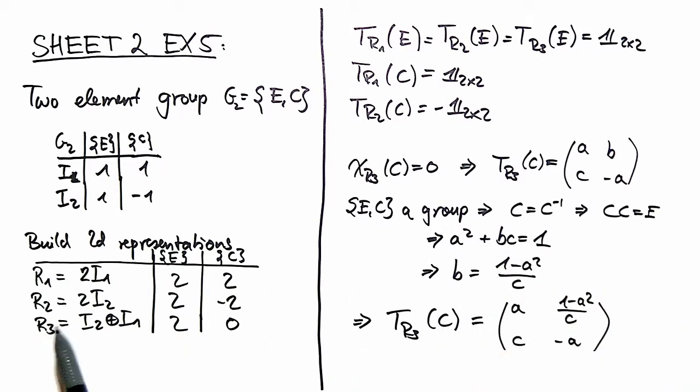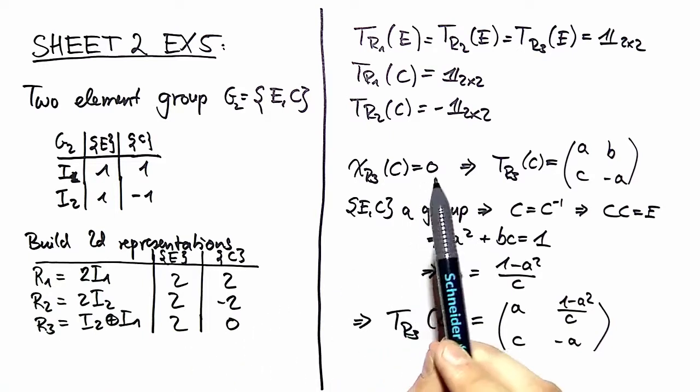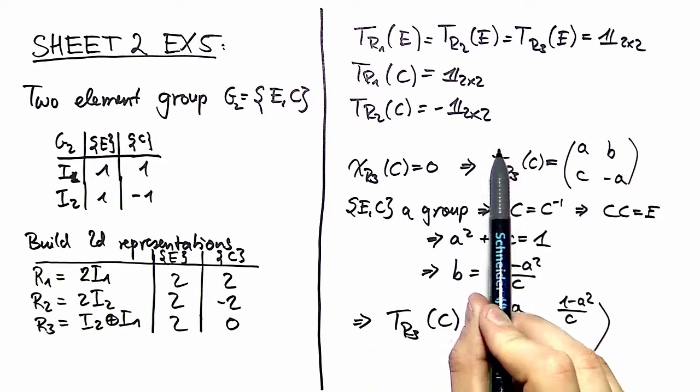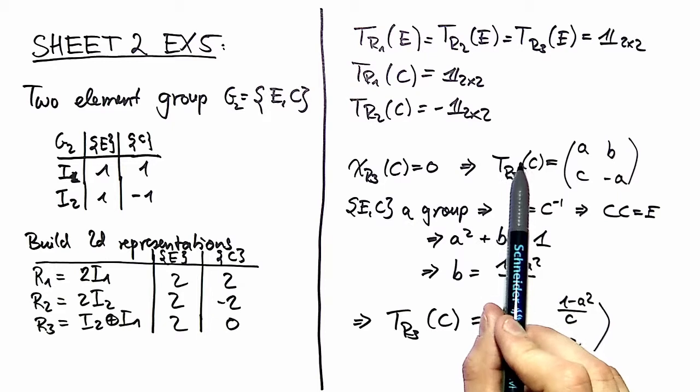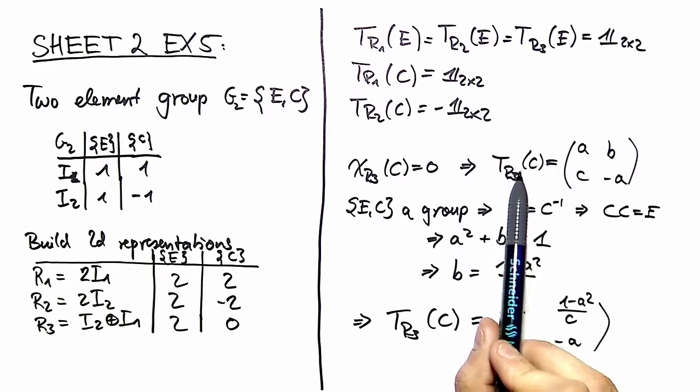These three representations with their corresponding matrices are the most general two-dimensional representation of a two-element group. Thank you for watching. I hope you enjoyed it. See you next time.